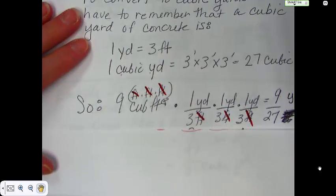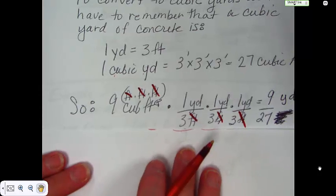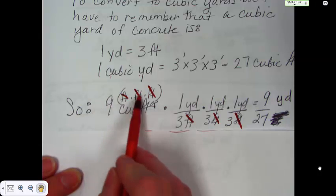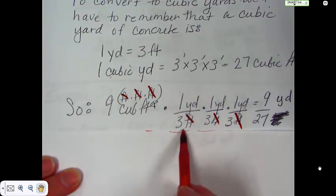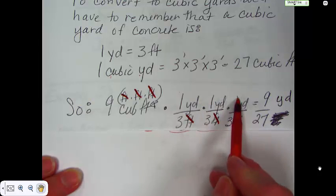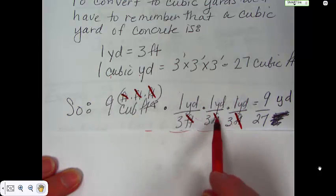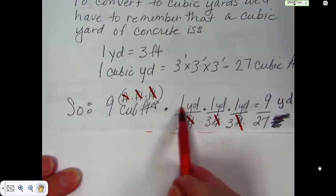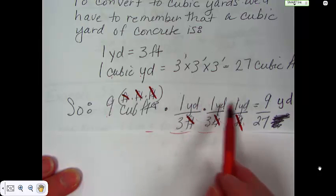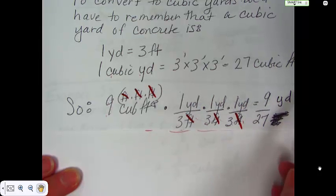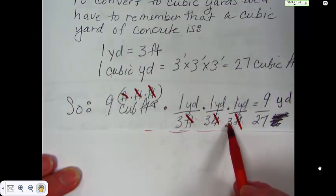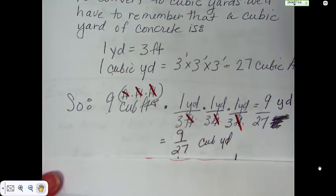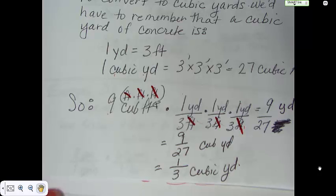When we go to convert that into cubic yards, we go: 9 cubic feet, which is 9 feet times feet times feet, then 1 yard over 3 feet, 1 yard over 3 feet, 1 yard over 3 feet. Cross out the feet, leave the yards. We end up with 9 times 1 times 1 times 1 yards cubed over 3 times 3 times 3, which is 27. We reduce and end up with 9 over 27 cubic yards, which is just one third of a cubic yard.